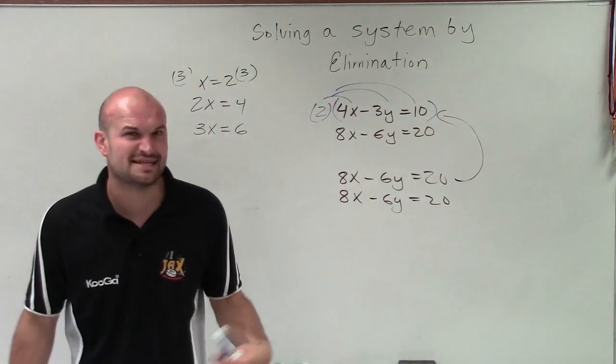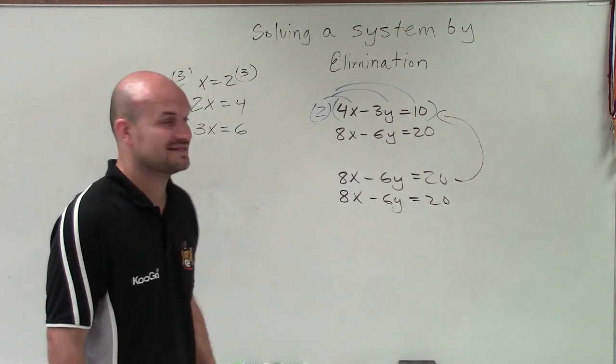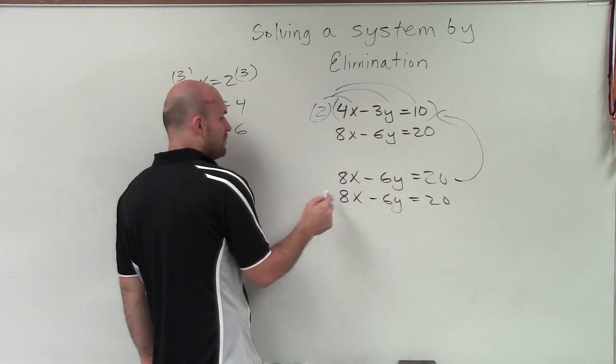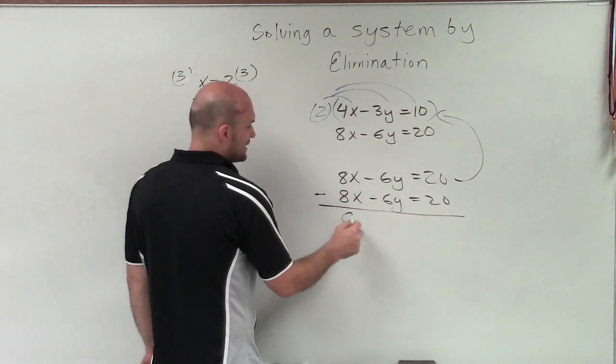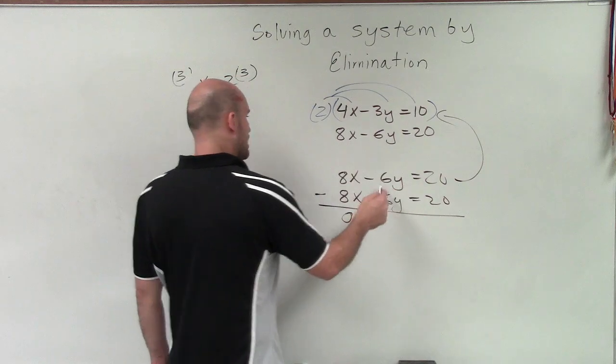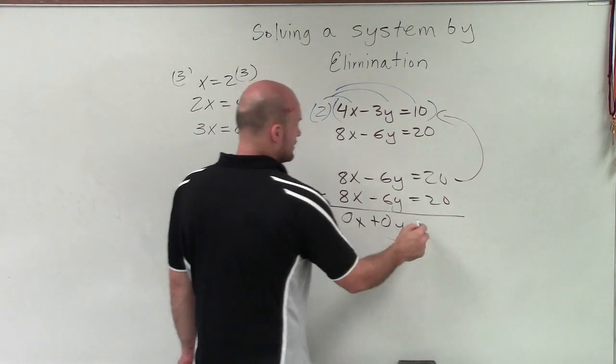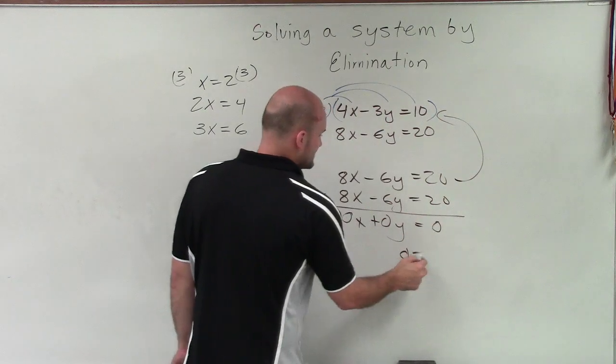And what you notice is these are exactly the same equations. So if I go ahead and do my subtraction, saying I want to eliminate the 8x and the 8x, I subtract. I get 0x, negative 6x plus. So I get a positive 0y equals 0. So I get 0 equals 0.